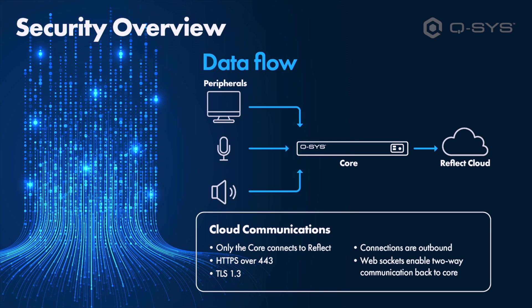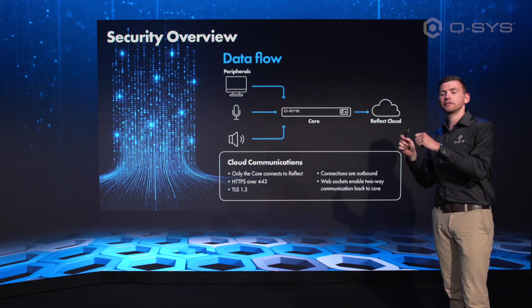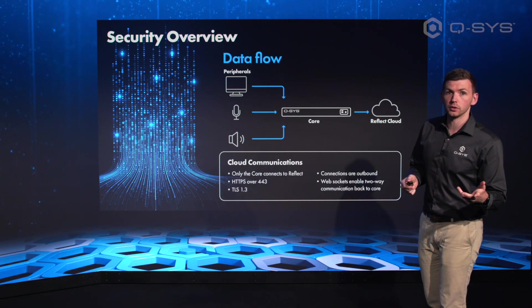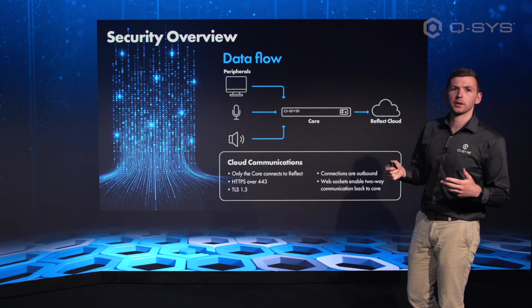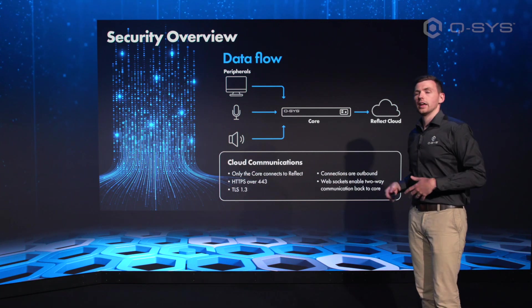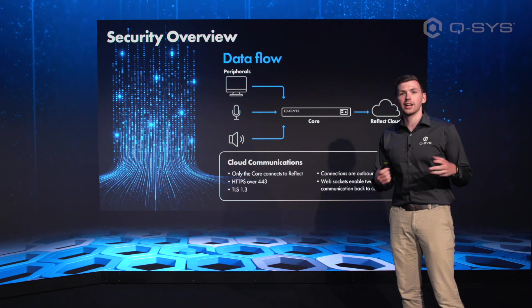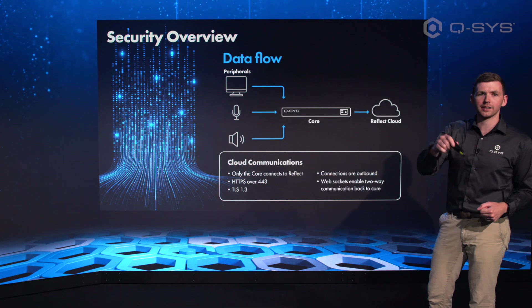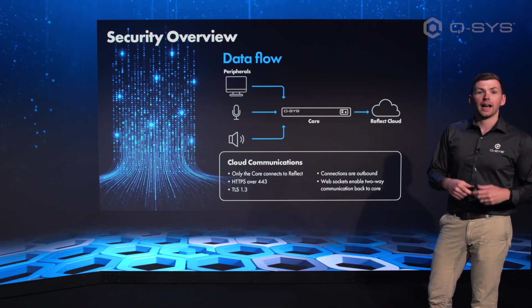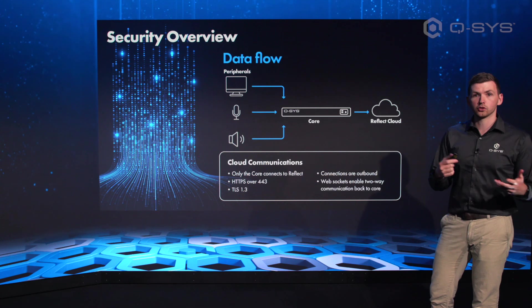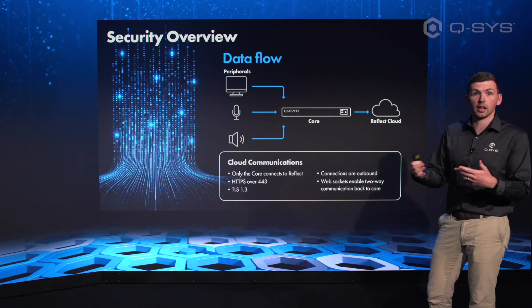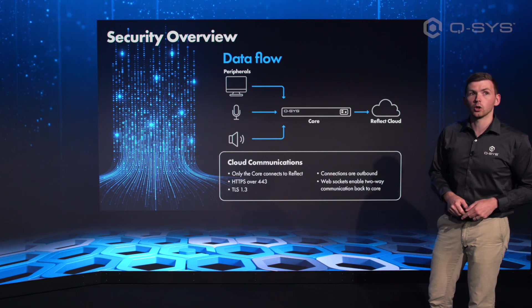We only need that single connection, and as we'll see later in the training, we can have that be a different physical connection on a different network to our AV network if we want. In terms of the actual communication, only the Core is connecting — it uses HTTPS over port 443, as you'd expect. The connections are outbound, so there's no surprise incoming connection from the cloud, and WebSockets allow for real-time two-way communication, giving you that remote commissioning experience almost as if you were locally on site.